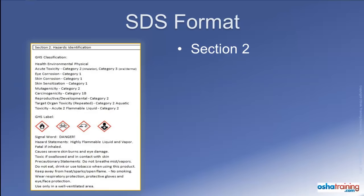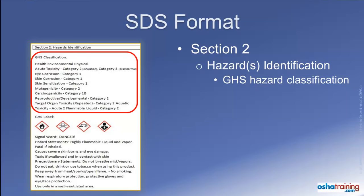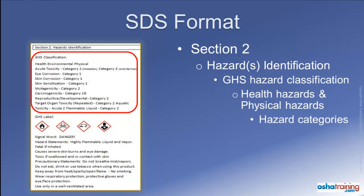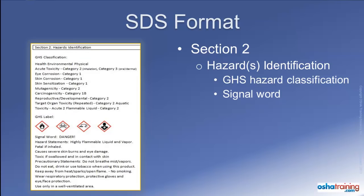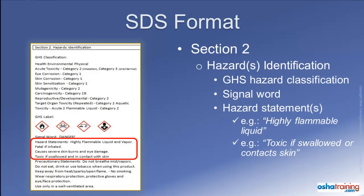The second section of a safety data sheet is titled Hazard Identification. Here you will find the GHS hazard classifications for the product, including those for each health hazard and physical hazard, and their individual ratings in applicable hazard categories. You will also find the appropriate signal word associated with the product. There are only two signal words used in the GHS system: either the word "danger," which indicates a relatively severe or immediate hazard, or "warning," which indicates a less severe but still potentially harmful level of hazard. This section will also display one or several hazard statements that give employees a quick warning about what hazards are associated with the product.